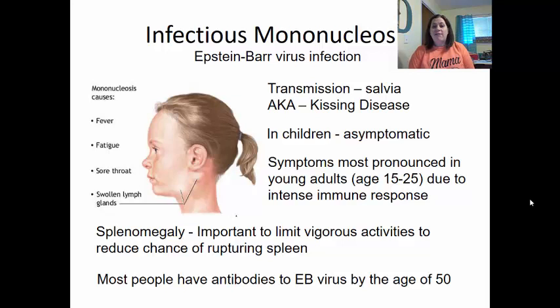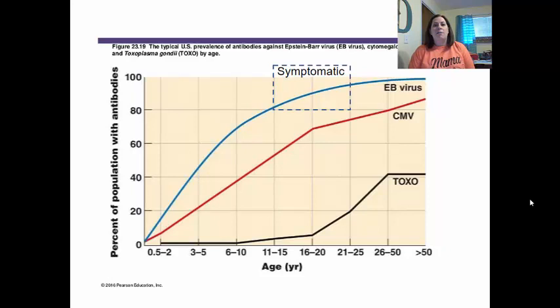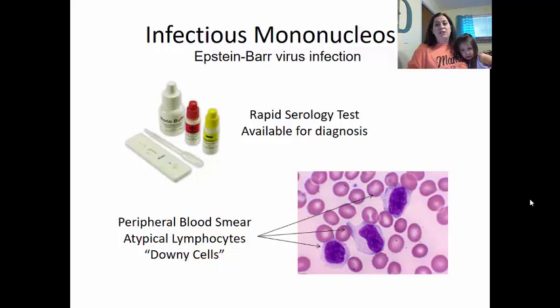When looking at the age chart for Epstein-Barr, the symptomatic stage is between ages 11 to 25. Many people are exposed before age 11 and remain asymptomatic. For diagnosis of infectious mononucleosis, a rapid serology test is available — a sample with specific antibodies changes color if positive for Epstein-Barr. A peripheral blood smear can also be done to look for atypical lymphocytes called Downey cells, which have a lobed nucleus.